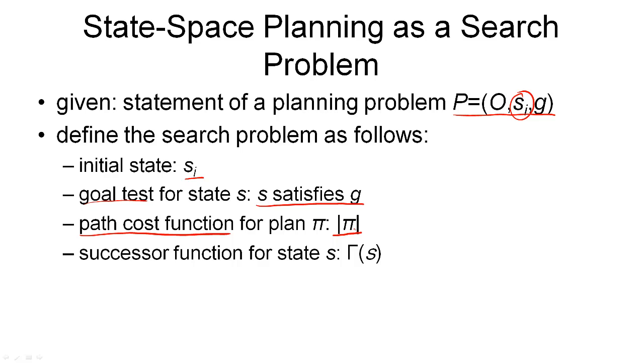Implicitly this means that all actions have equal cost here and that is why the path cost function as the length of the plan works. And the final component we need is a successor function and the successor function denoted gamma of S here is what we will define next.